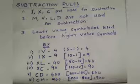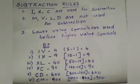Next, we will see the subtraction rule. Only three symbols are used for subtraction: I, X, and C. M, V, L, and D cannot be used for subtraction. Here, the lower value symbols are used before the higher value symbols. There are six different combinations: IV is 4, IX is 9, XL is 40, XC is 90, CD is 400, CM is 900. Only in these series we can see the subtraction rule.